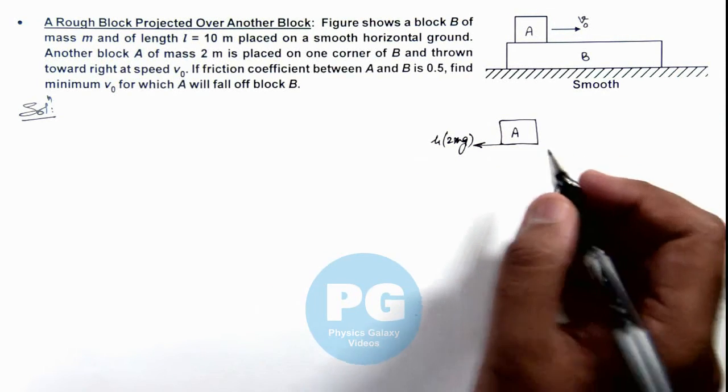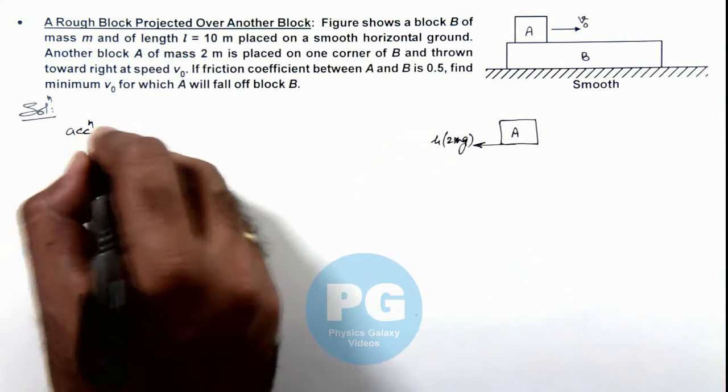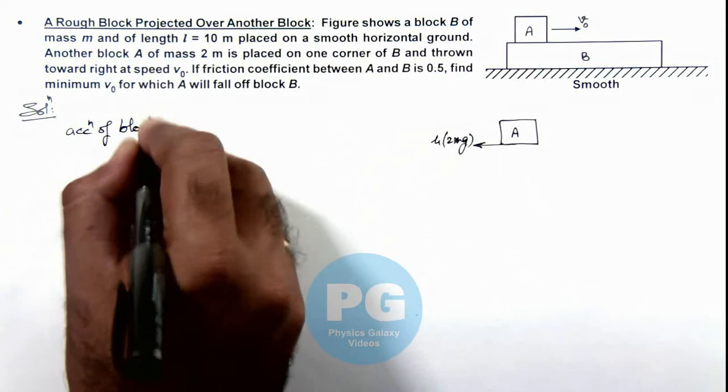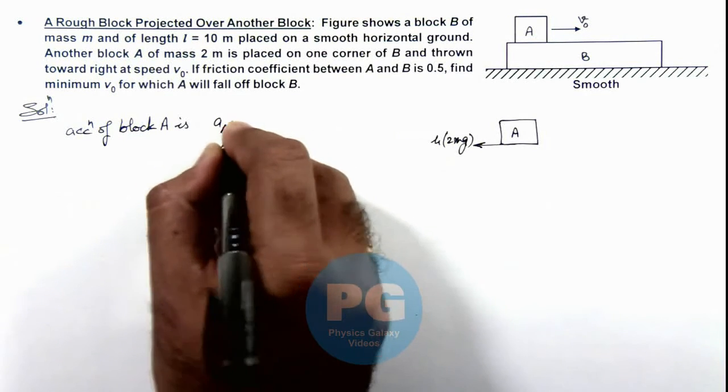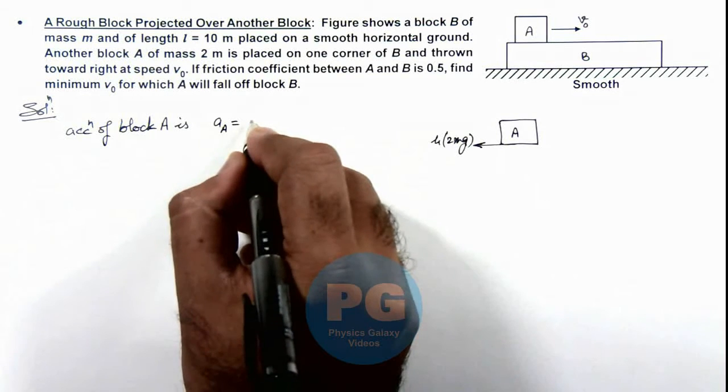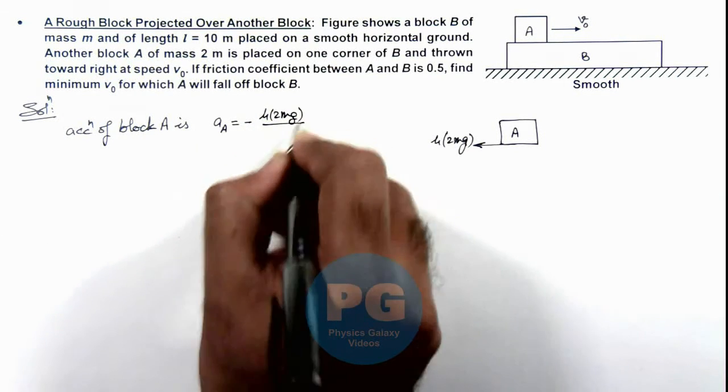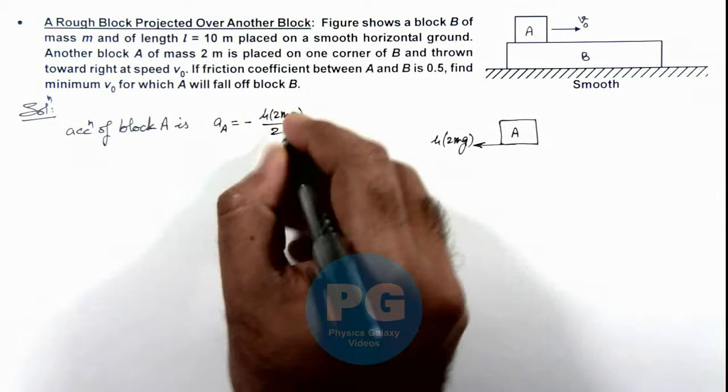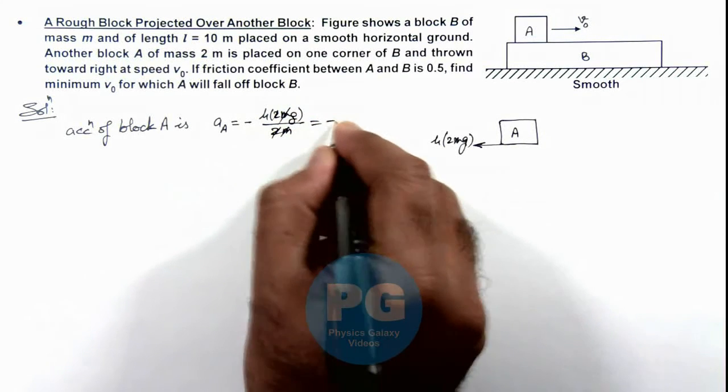So as it is moving forward it'll have a retardation. Here we can write acceleration of block A is negative μ × 2mg divided by 2m. As its mass is 2m, here 2m gets cancelled out, and its acceleration is -μg.